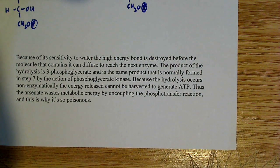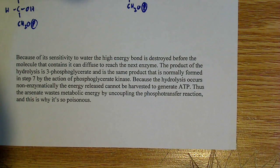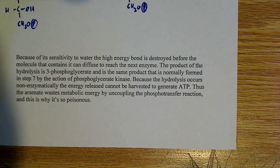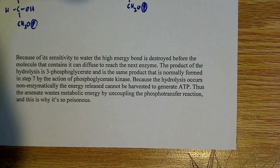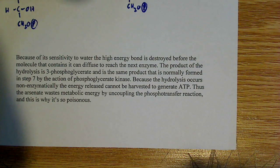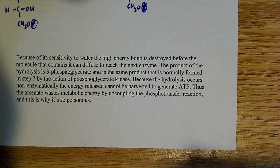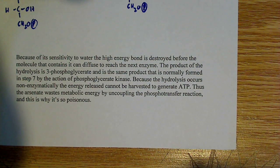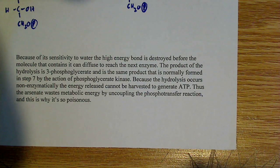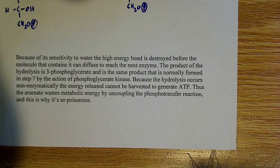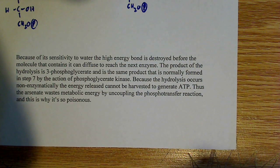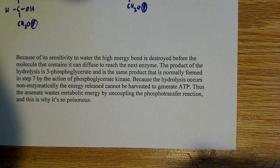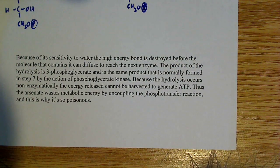Because of its sensitivity to water, the high energy bond is destroyed before the molecule can diffuse to reach the enzyme. It never reaches the enzyme in step seven. The high energy bond is destroyed, and the product of hydrolysis is 3-phosphoglycerate, which is the same product that's normally formed in step seven.